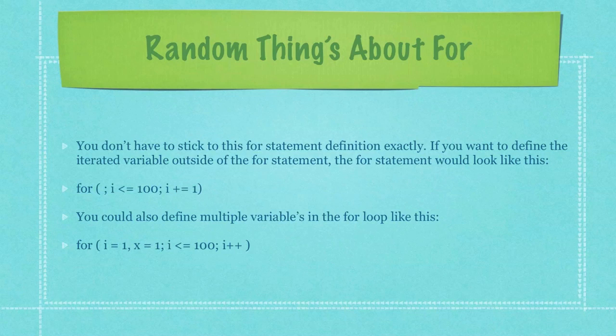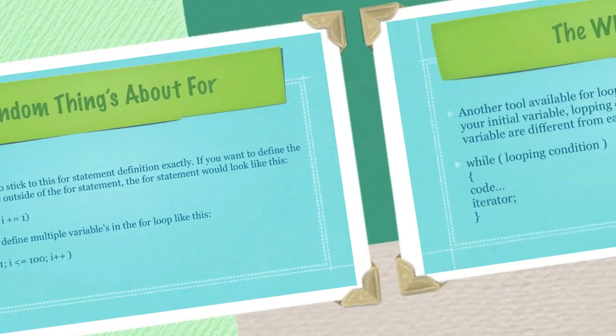You could also define multiple variables in a for loop as I show you here in this example as I'm defining the variables i and x inside of the same for loop.